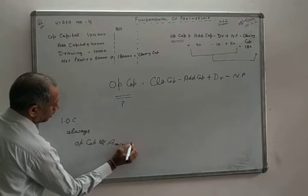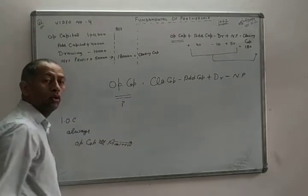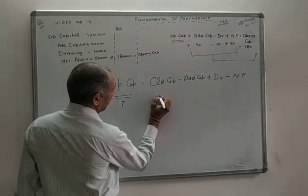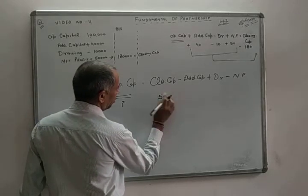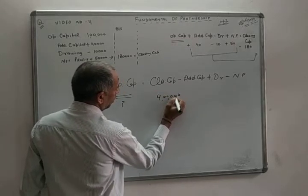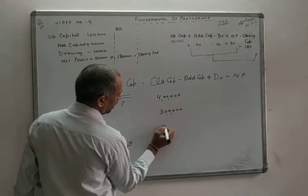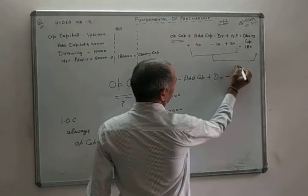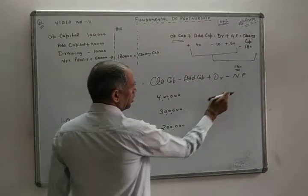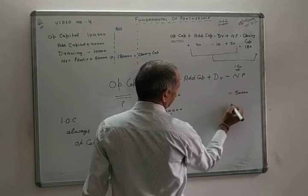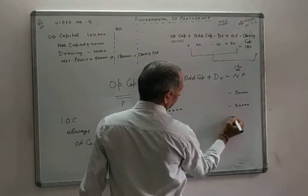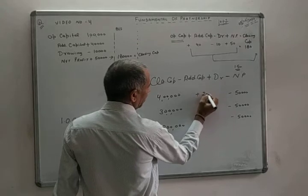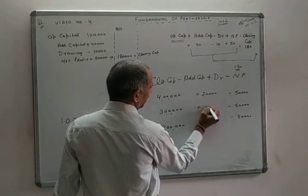If closing capital is given in a question, we first calculate opening capital. For example, there are three partners. The first partner's closing capital is ₹85,000, the second partner's is ₹4,00,000 (sorry, ₹4 lakh), and the third partner's is ₹2 lakh. The three partners earned a combined profit of ₹1,50,000, which is divided equally — each partner gets ₹50,000, and the third gets ₹3,000.